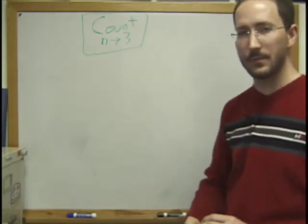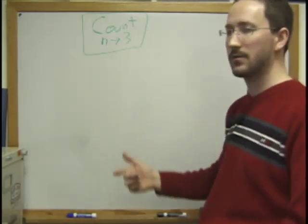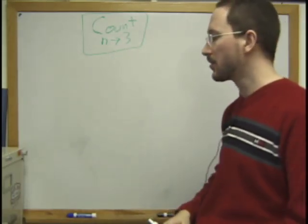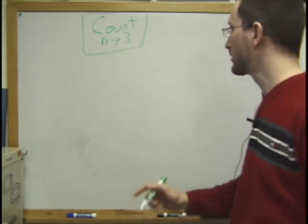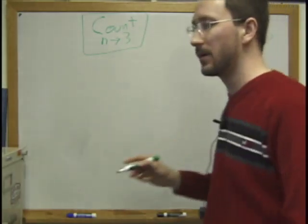Now, we hit the if statement, and we check, is n bigger than 0? And it is. So what we do is we print n. So we get a 3 printed on the screen.